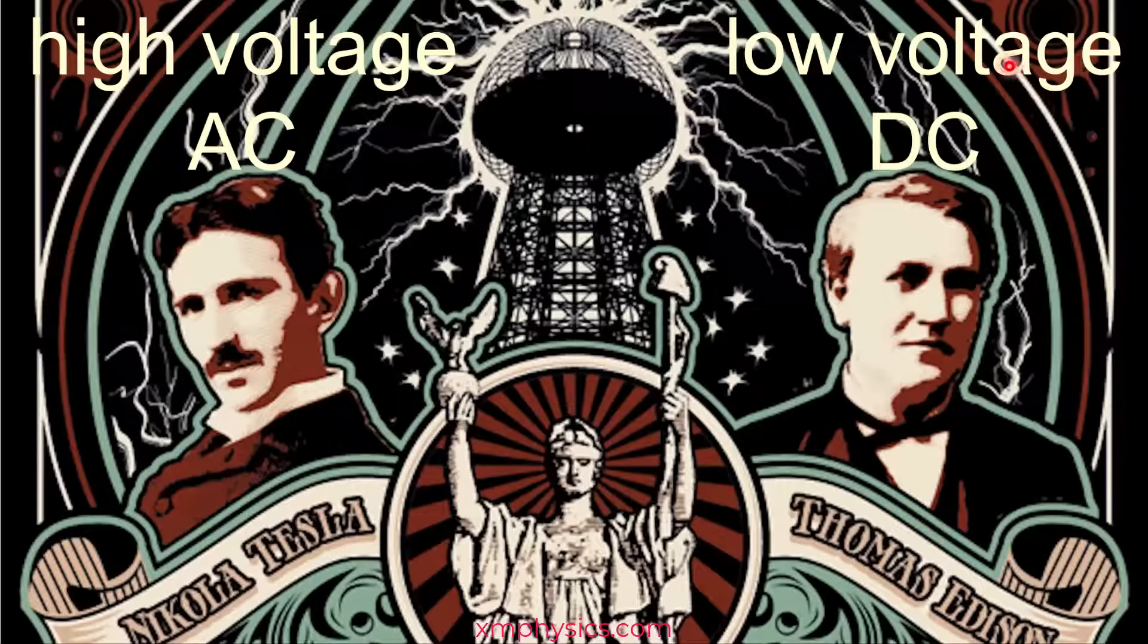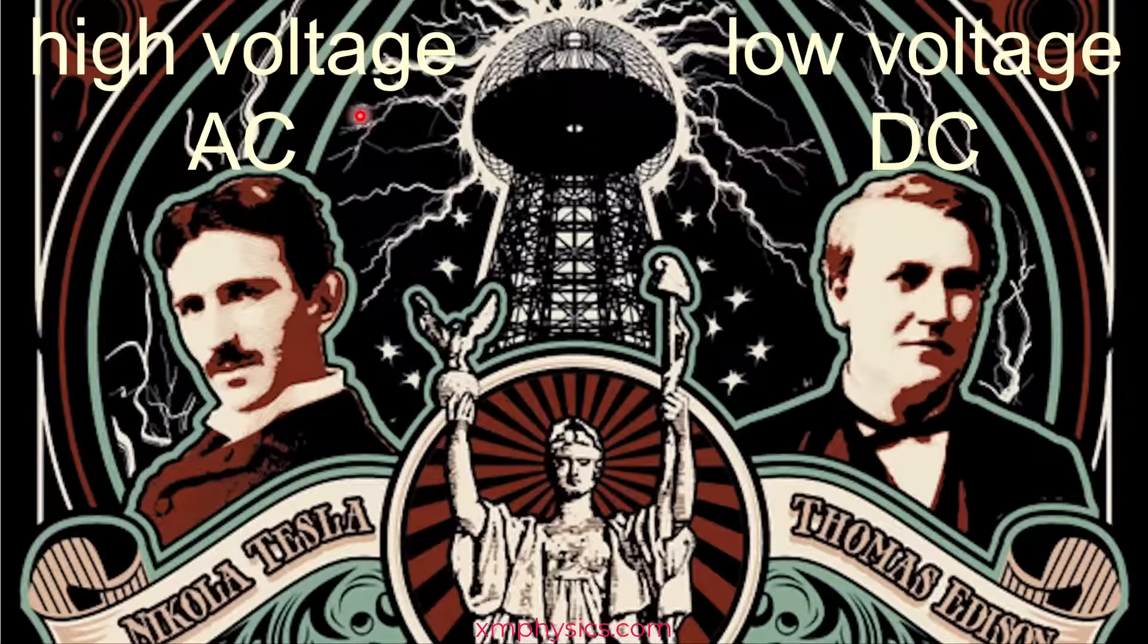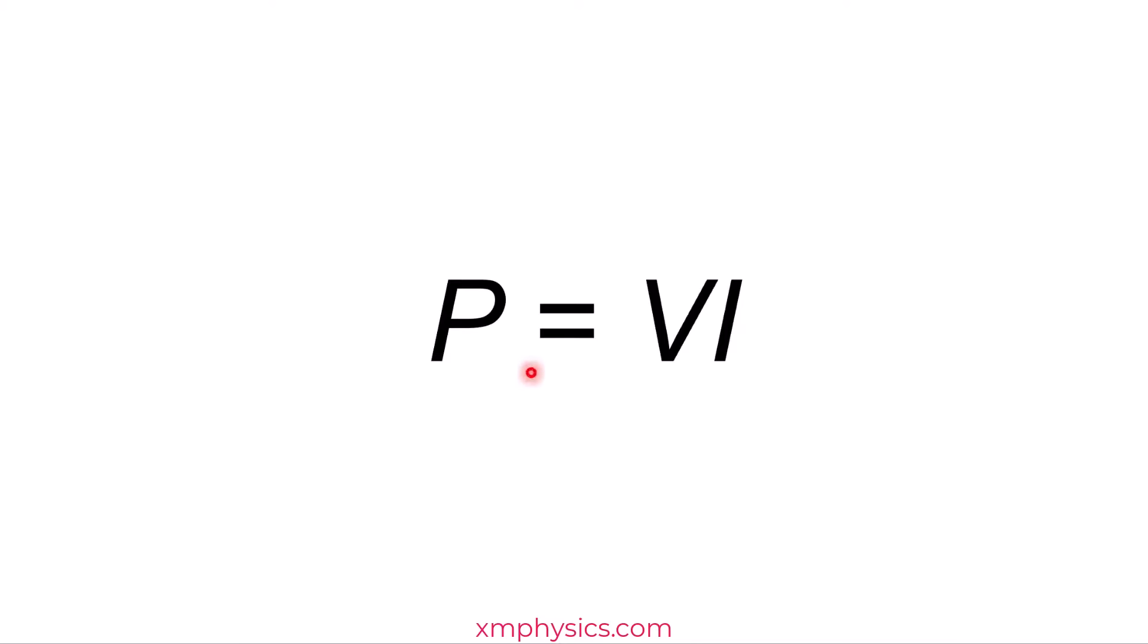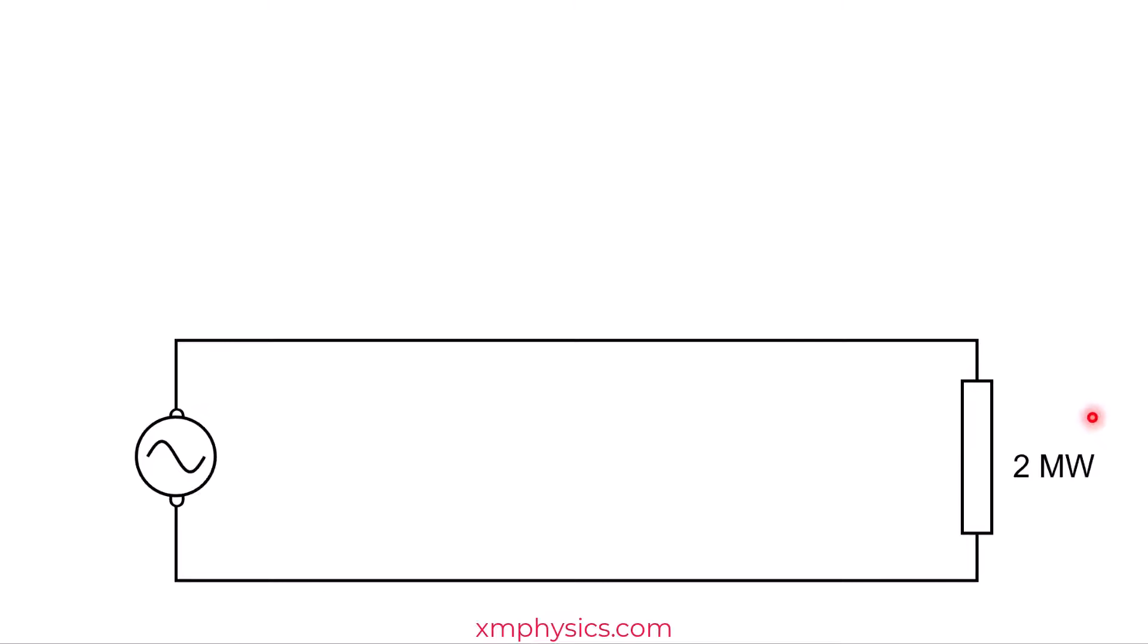Well, you already know who won the battle. Low voltage DC was totally defeated by high voltage AC. But why? To answer this question, let me remind you of this formula: power P equals voltage times current. So the same amount of power can be provided using different combinations of voltage and current. What I mean is, to provide a certain amount of power, you can use a high voltage and low current, or you can use low voltage but high current.